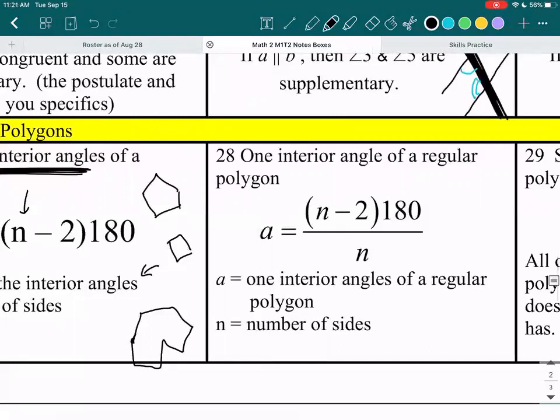So box number 28 says one interior angle of a regular polygon. So regular polygon, let me remind you, is when your polygon, your shape has, it's like the most perfect shape for the number of sides.